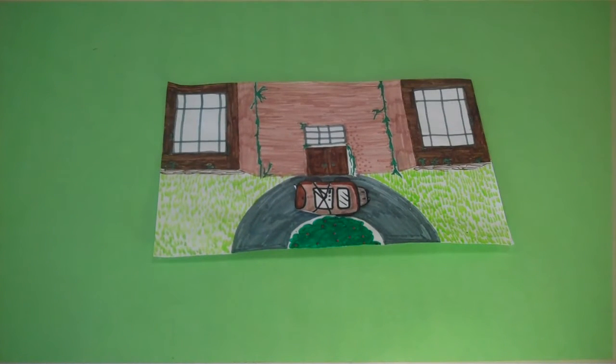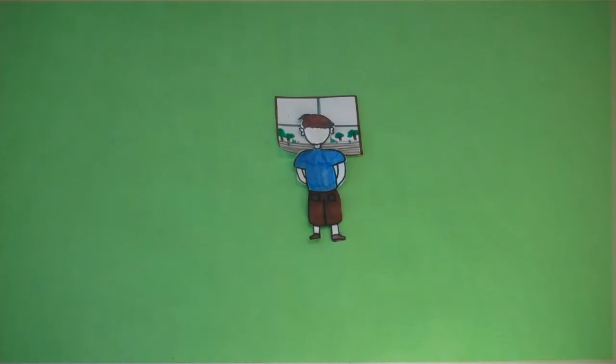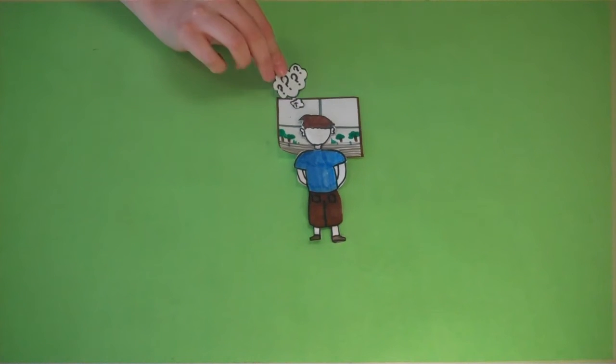When Bruno's family arrived, Bruno was disappointed to find out that they'd be there for the foreseeable future. Once inside, Bruno saw people through his bedroom window and wondered about them as he watched people walk around on the dirt.